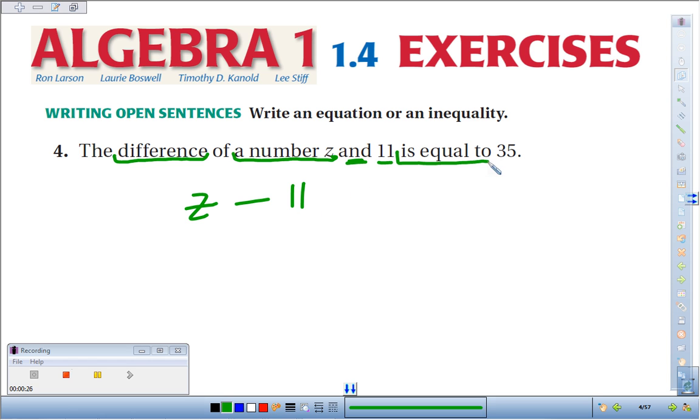Now we use this key phrase 'is equal to' for the equal sign, and 35. And there we have it: the difference of z and 11 is right there. 'Is' means equals 35.